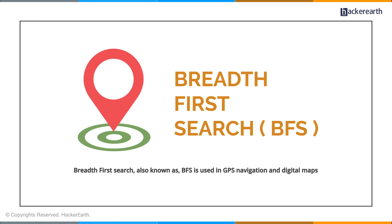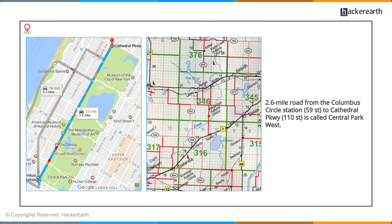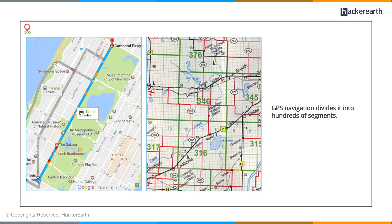Before you begin with the breadth first algorithm, you need to understand how GPS navigation actually works. Digital maps, unlike humans, see streets as a bunch of nodes. The 2.6 mile road from Columbus Circle station at 59th Street to Cathedral Parkway at 110th Street, called Central Park West, is considered by us humans as a single entity. But a GPS navigation or any digital map divides it into hundreds of segments, some only 24 meters long. A GPS looks at the street as a graph divided into vertices and edges.